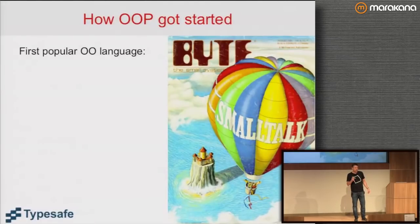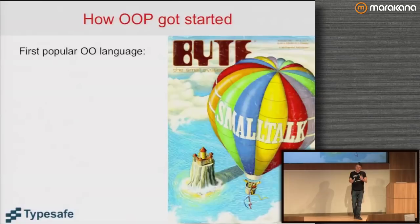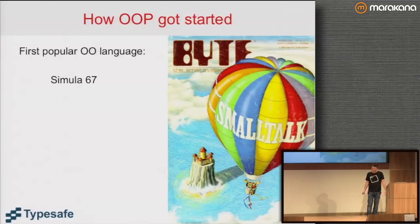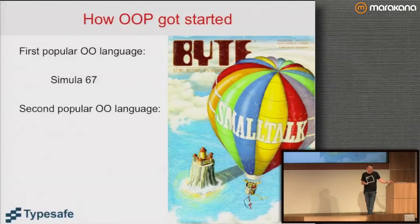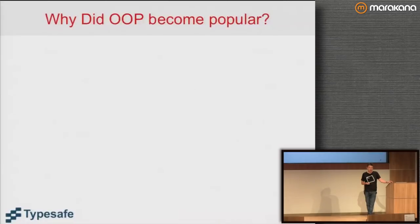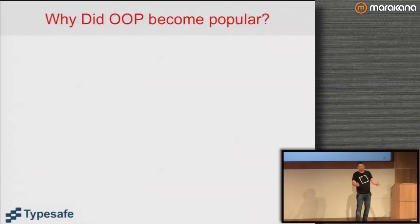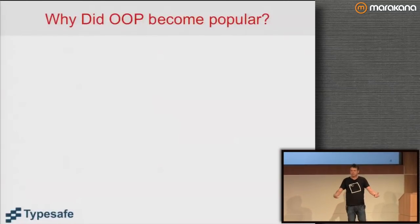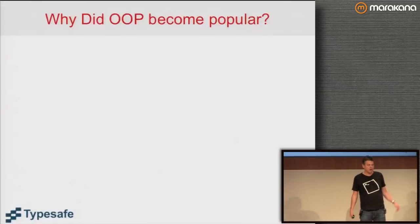So now I have a question for you: what was the first object-oriented programming language? You didn't fall for Smalltalk even though I sort of led you there. It was Simula 67 — that was a good decade before Smalltalk came out. And the second then was Smalltalk.